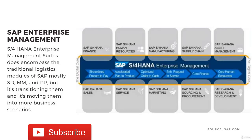Traditionally, logistics was broken down into different modules: Sales and Distribution, Materials Management, Production Planning, and on the sidelines Quality Management and Plant Maintenance as well. A traditional ECC 6.0 suite is made up of this whole portfolio — including accounting, cost applications, and human resources — but logistics is traditionally made up of those modules.